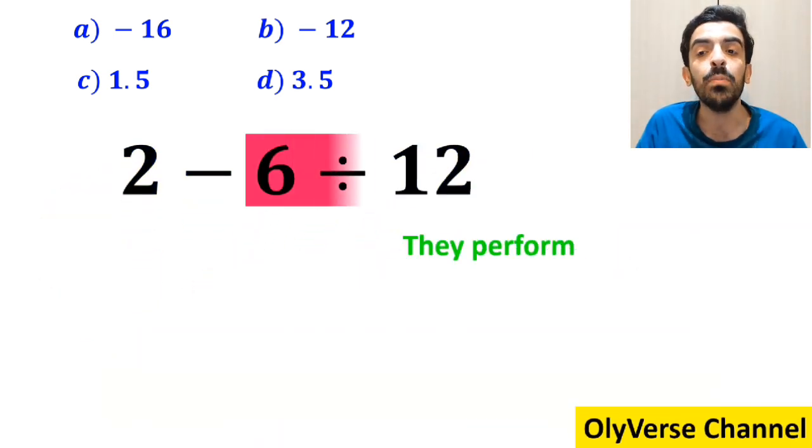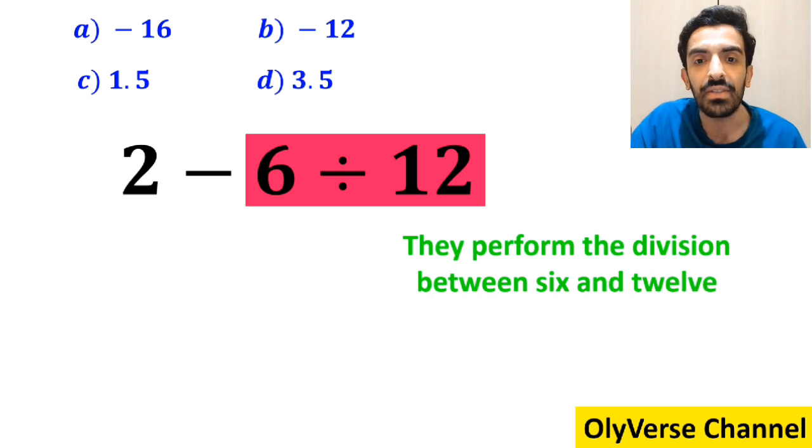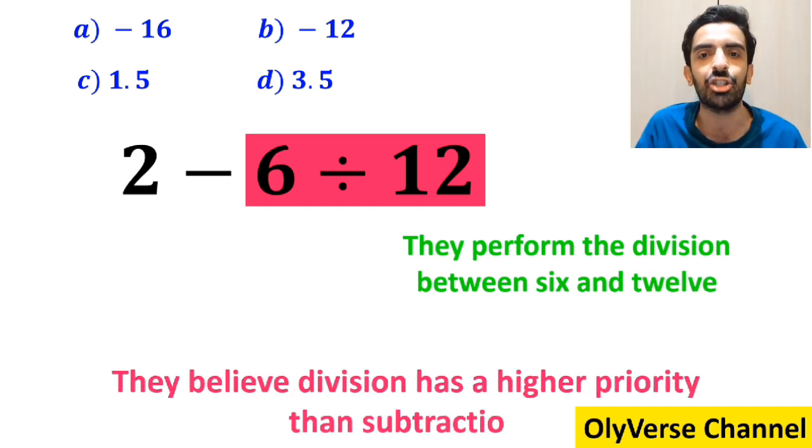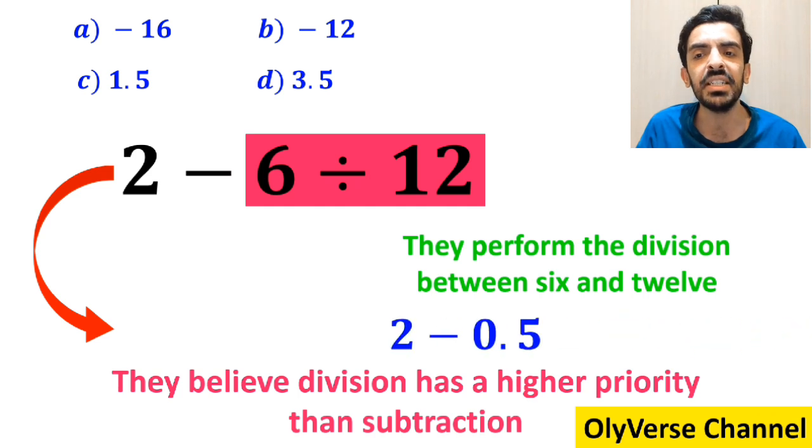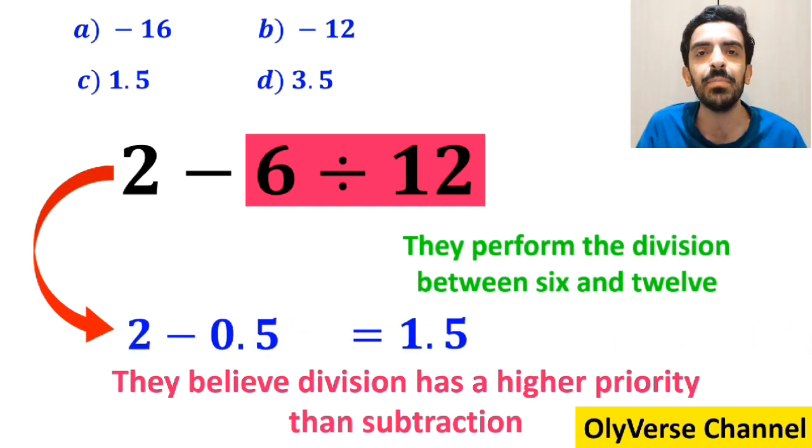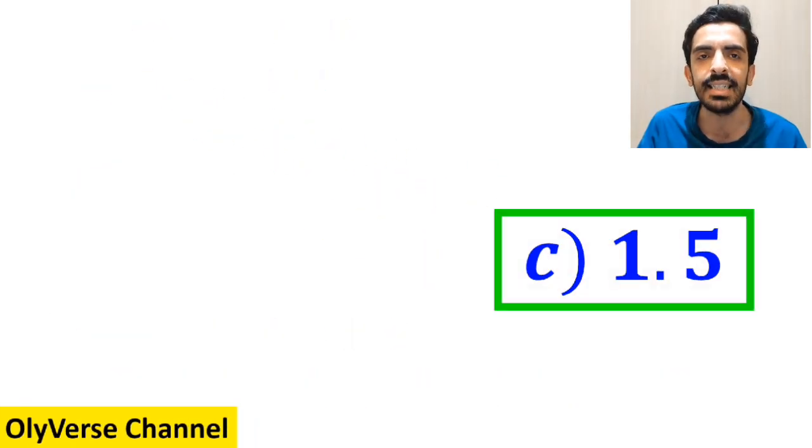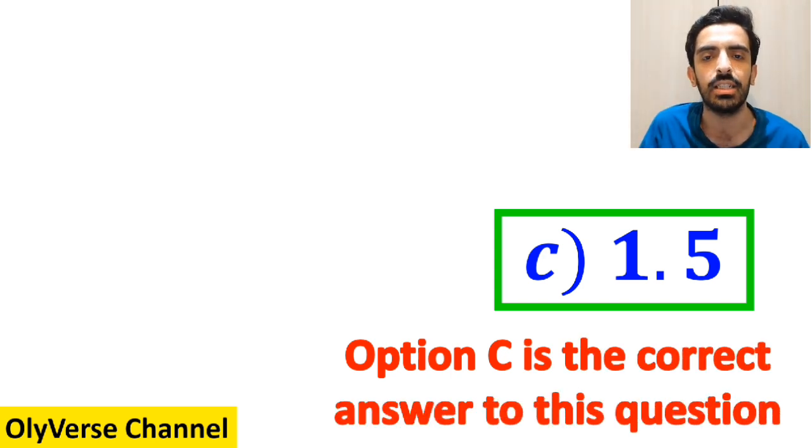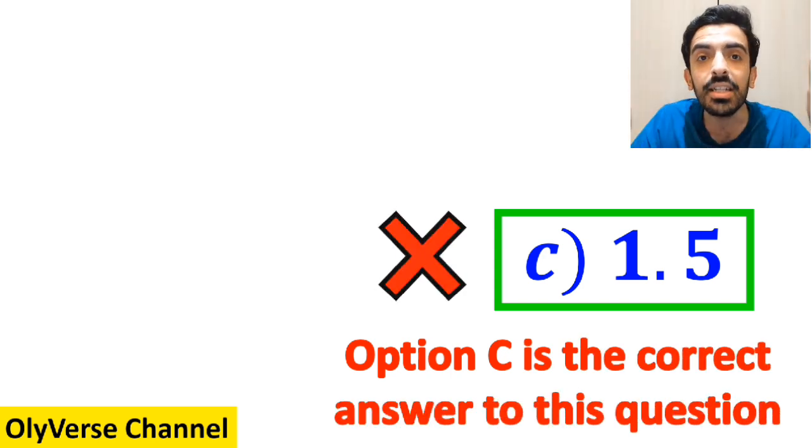The next step they perform the division between 6 and 12 since they believe division has a higher priority than subtraction, and they simplify this expression to 2 minus 0.5, which finally gives them the answer 1.5. Then without any hesitation they quickly say that option c is the correct answer to this question, but it's not the correct answer.